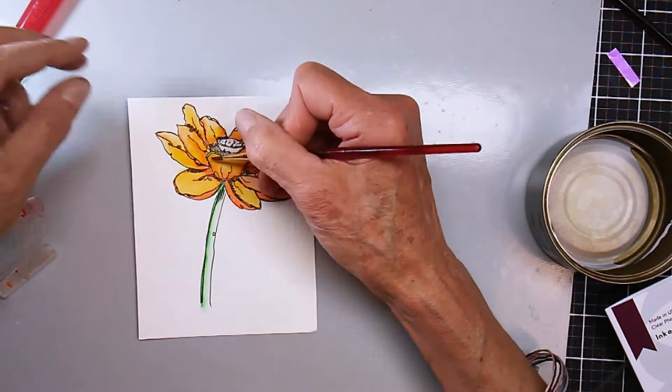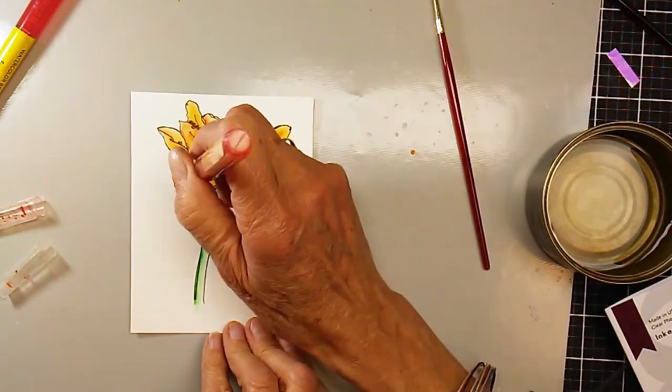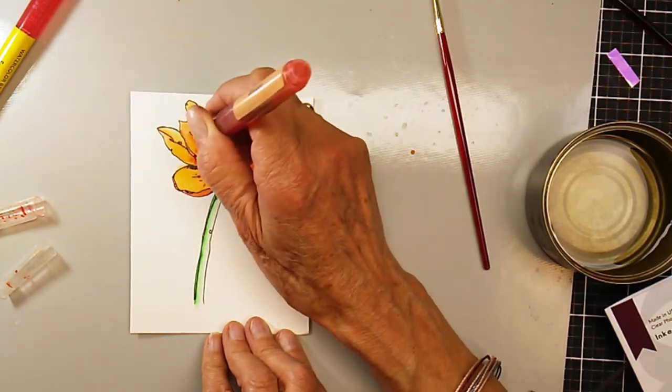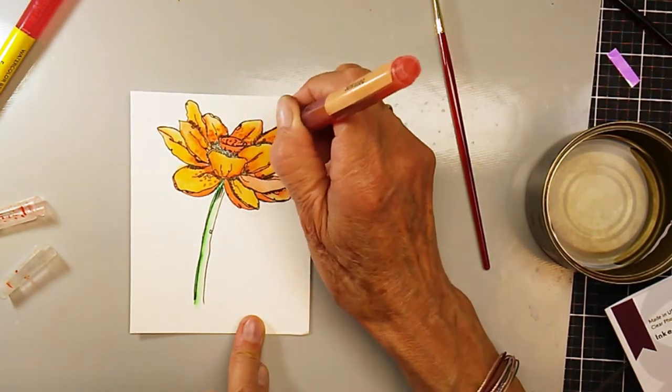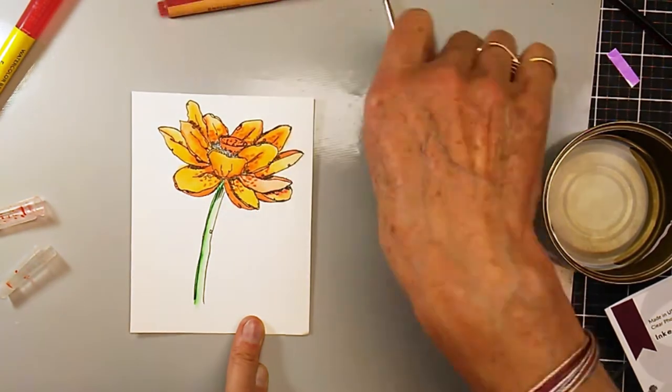Just kind of adding the deeper color or the color straight from the brush marker to the base of the flower or to the darker parts. And then taking my brush with a little bit of water on it and spreading it out there.